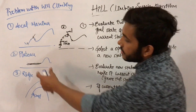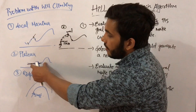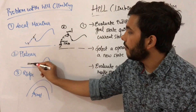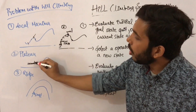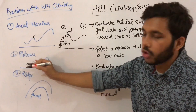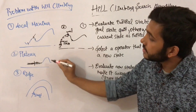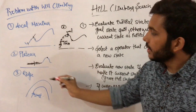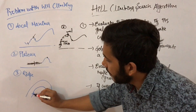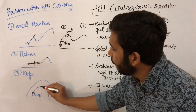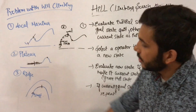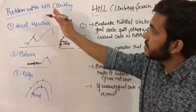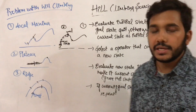The second problem is plateau. At a particular point you find a flat area where all the neighbors have the same value, so the algorithm stops its search and will not look for any further maxima. The third problem is the ridge. Suppose you started from this point, moved along a path, declared it the maximum value, but ignored another path which may have had an even higher value. These are the three problems associated with hill climbing.